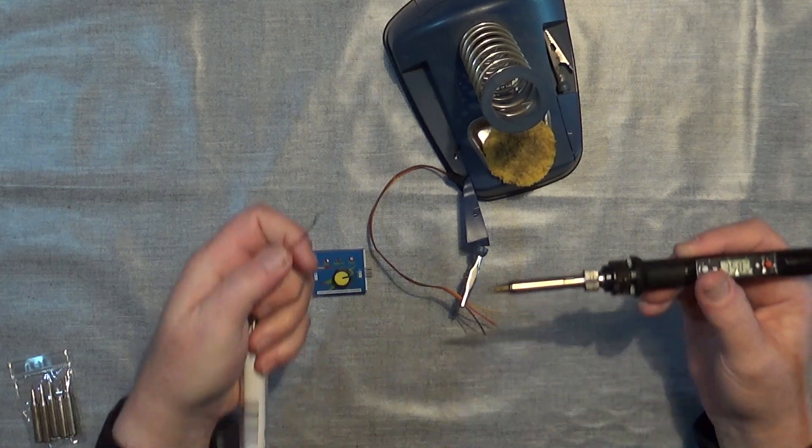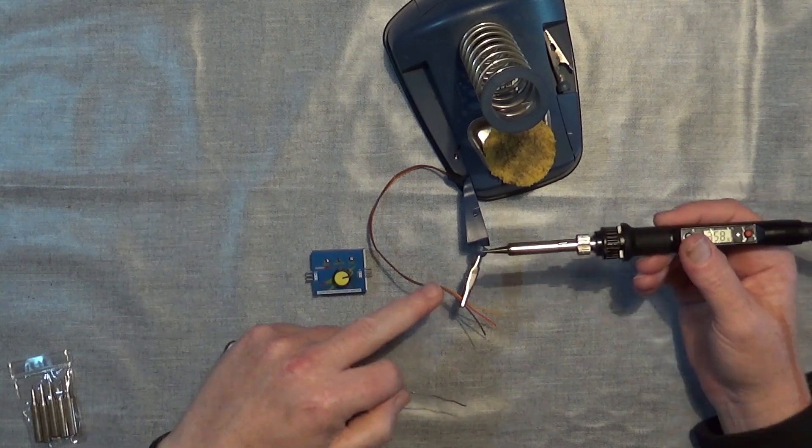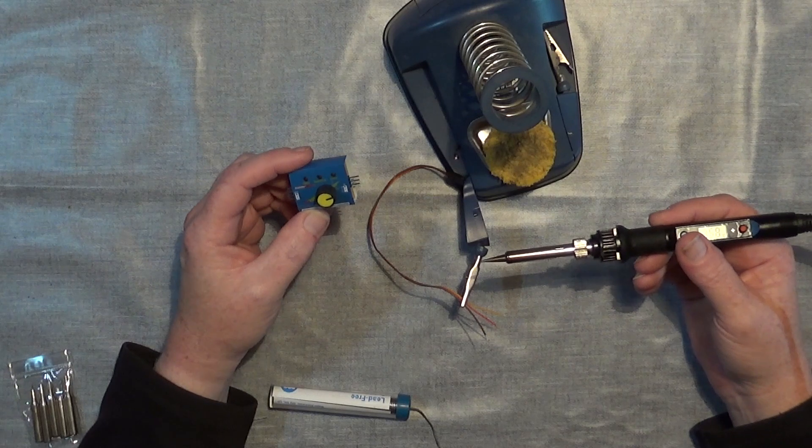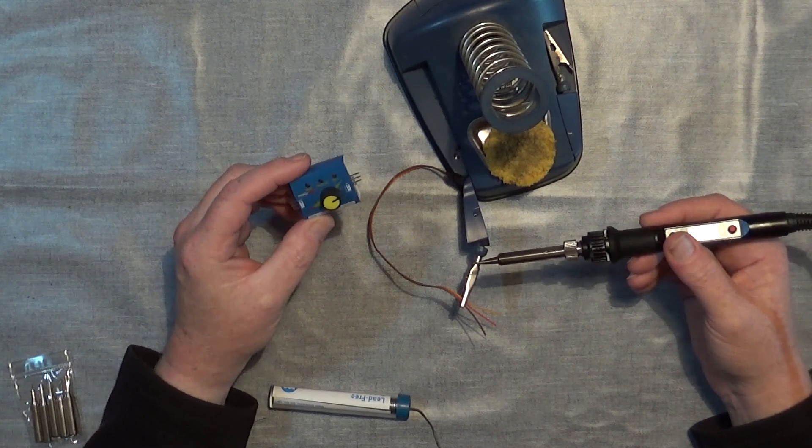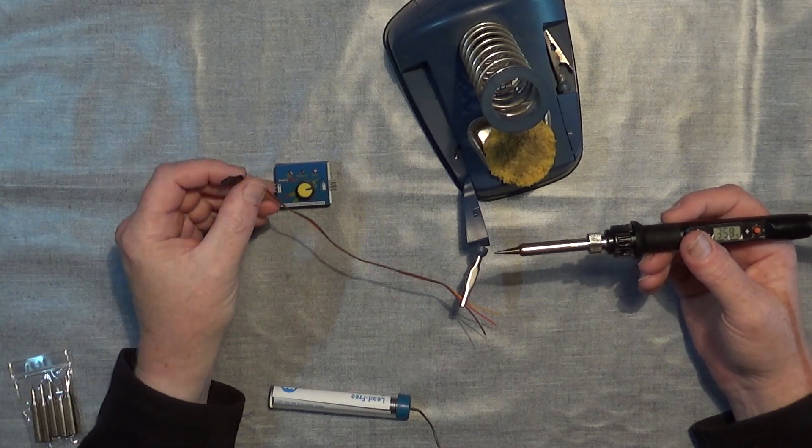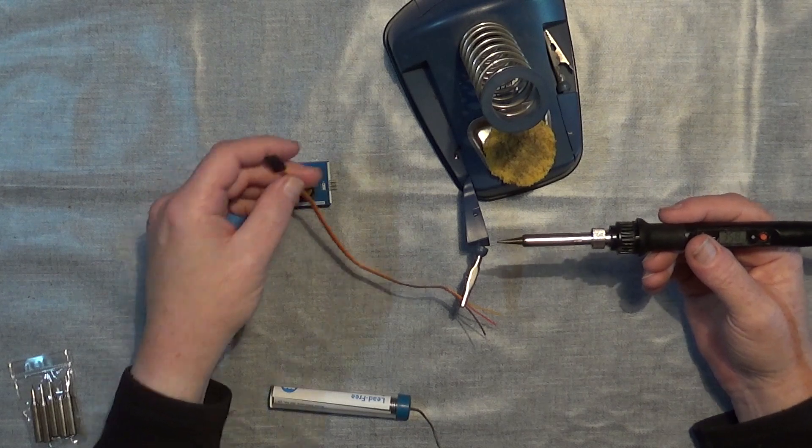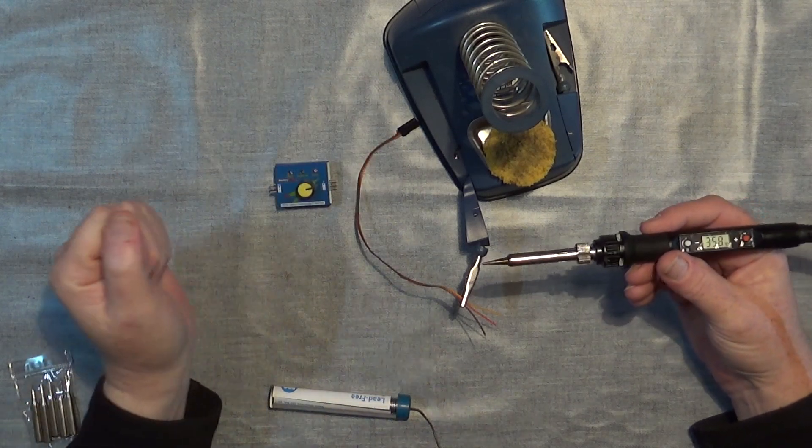I've got some 1mm lead free solder. And what I've got here is a Hobby King cheap servo tester. I've found a spare servo cable that I cut off a servo that had completely and utterly stopped working.